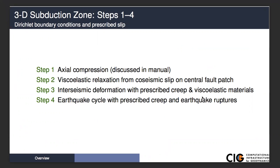Step two is a static problem — viscoelastic relaxation from co-seismic slip on the central fault patch on the subduction interface. Then we'll discuss interseismic deformation with prescribed creep, maintaining the viscoelastic materials. Step four will combine the co-seismic and interseismic parts to do a couple of earthquake cycles with prescribed slip, including ruptures on the subduction interface and on the splay fault.